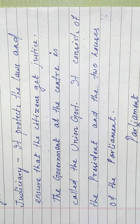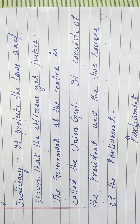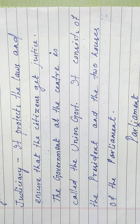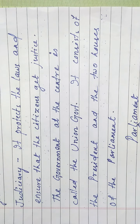The government at the center is called the Union Government. It consists of the President and the two houses of the Parliament. Parliament consists of Lok Sabha, Rajya Sabha, and the President.